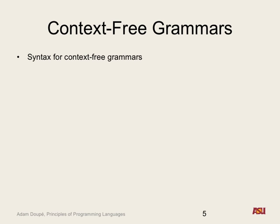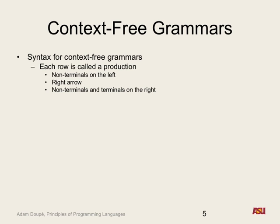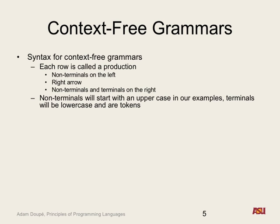Each rule is called a production — the non-terminal on the left-hand side produces the symbols on the right-hand side. By convention going forward, non-terminals start with uppercase and terminals are lowercase. This way you can tell just from looking at the grammar. All terminals are actually tokens. S will typically be the starting non-terminal. We can use the bar operator from regular expressions to combine multiple alternatives for the same non-terminal on one line.